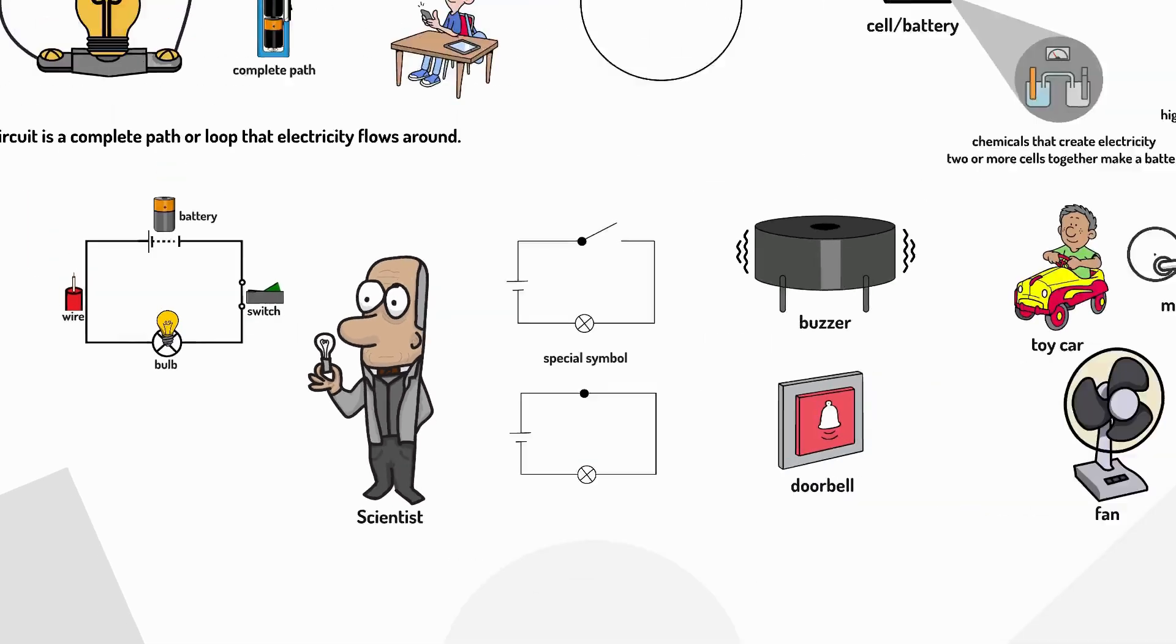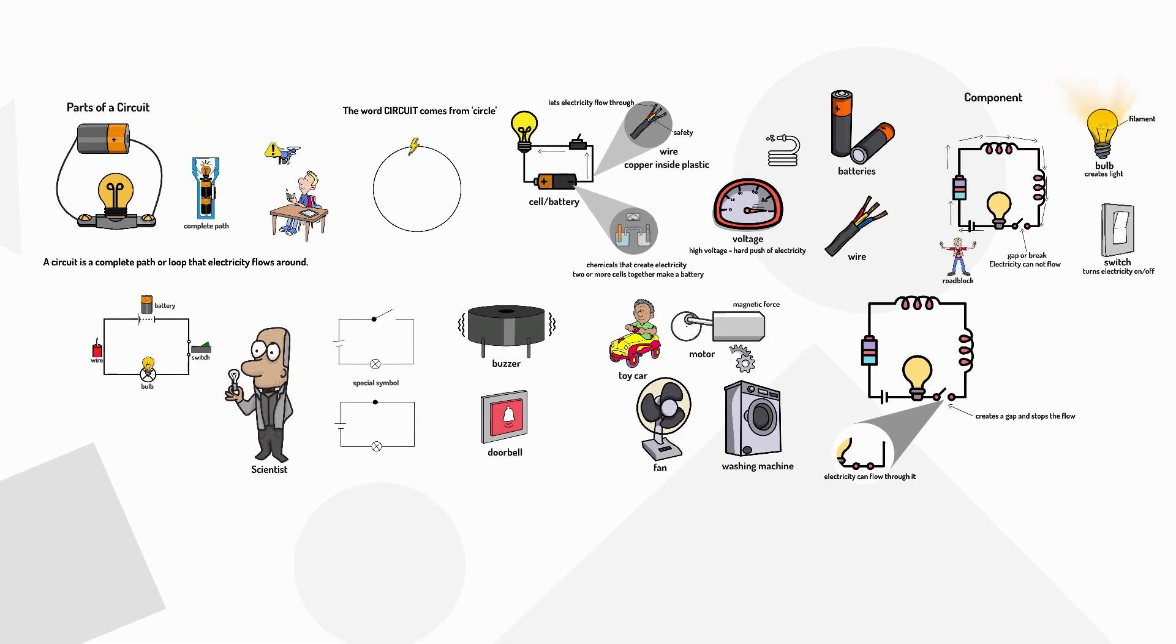Remember a circuit needs a power source like a battery or cell, wires to carry the electricity and components like bulbs, buzzers or motors. Everything must connect in a complete loop with no gaps for electricity to flow.